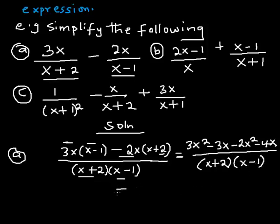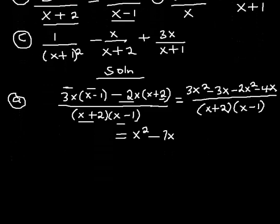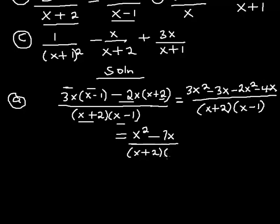I bring down my denominator: (x + 2)(x − 1). Now I collect like terms: 3x² − 2x² gives me x²; −3x − 4x gives me −7x. So my final answer for part (a) is x² − 7x, divided by (x + 2)(x − 1).